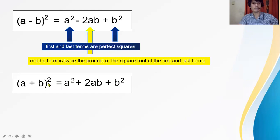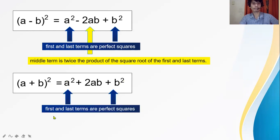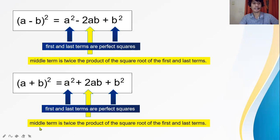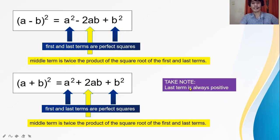For a plus b squared equals a squared plus 2ab plus b squared: the first and last terms are perfect squares, and the middle term, 2ab, is twice the product of the square root of the first and last terms. Take note: the last term is always positive. If the last term is not positive, therefore it is not a perfect square trinomial.